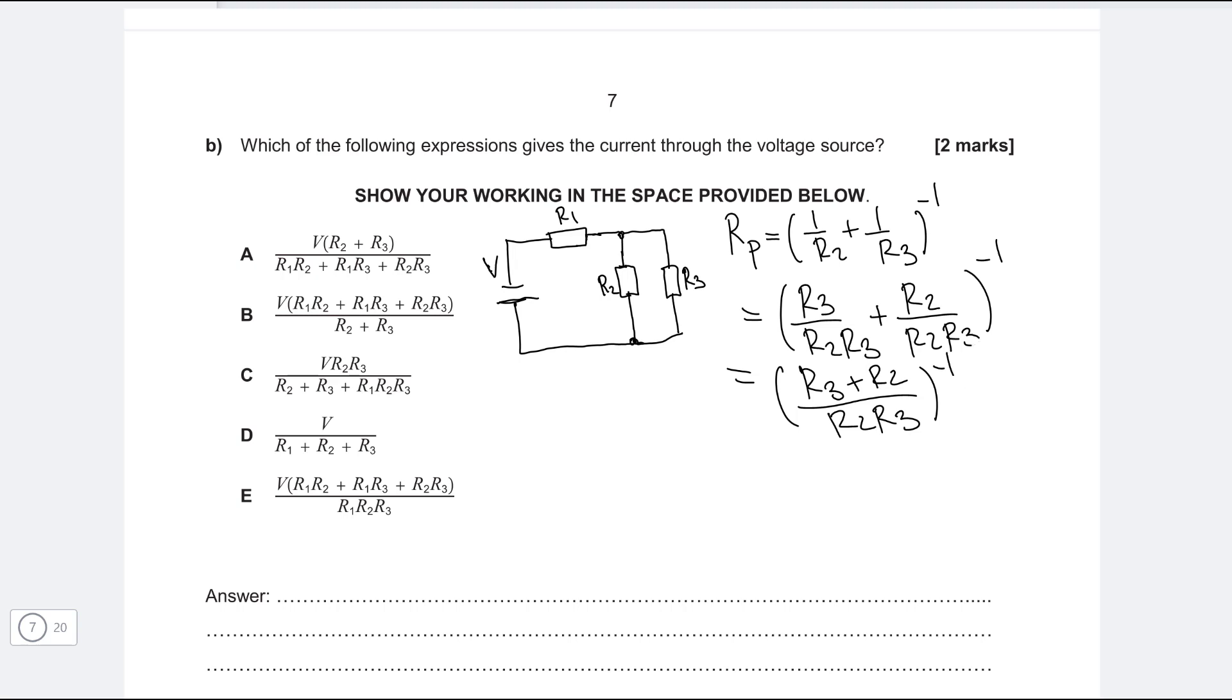So this will be equal to R3 plus R2 over this raised to the power of minus 1. Now, because this is raised to the power of minus 1, we can just flip this fraction. So this will be equal to R2 R3 divided by R3 plus R2.